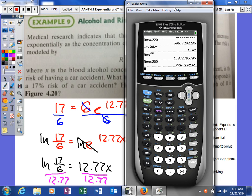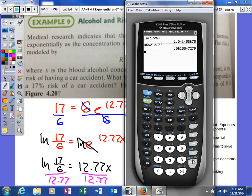Let's move it over a little bit. Clear, and I'll type in natural log of 17 divided by 6. Close your parentheses. So we're going to divide that by 12.77. We get 0.08.